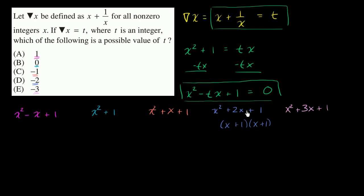So because I can factor this, I know that this right over here is going to be my answer. If t is equal to negative two, then all of this stuff boils down to that.